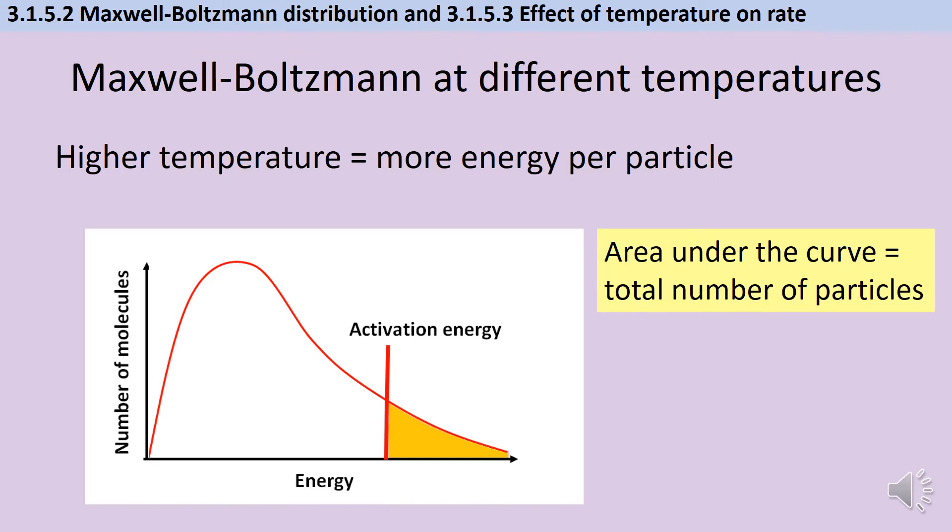The second thing to bear in mind is that the area under the curve represents the total number of particles so the area under the curve can't change. This means that as you skew the graph to the right it's also going to get flatter.